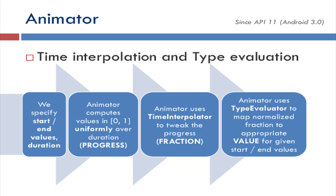Let us start with interpolation and evaluation. There are two things: time interpolation and type evaluation. We initially specify start and end values and duration. Once we set these up, the Android system automatically computes values between 0 and 1 — where 0 is the start of the animation and 1 is the end. For example, if we specify a duration of 10,000 milliseconds, at time 0 the output value is 0, and at 10,000 milliseconds the output value is 1. This is uniformly interpolated over the duration, which we will call progress.